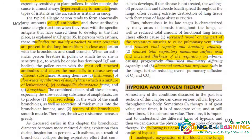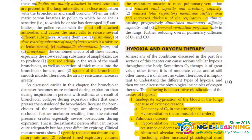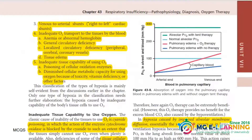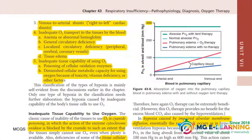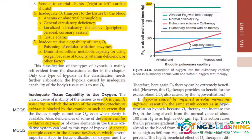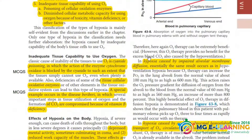The next topic is hypoxia. The classification of the causes of hypoxia is very important and this is also a past UQ, so don't forget this topic — you must do it. The MCQ points are highlighted in yellow.